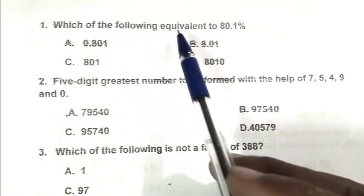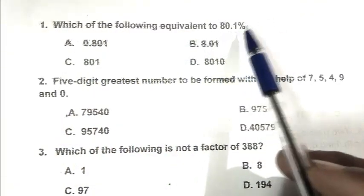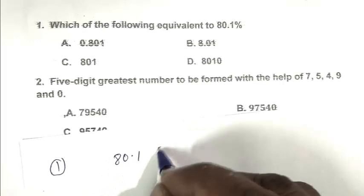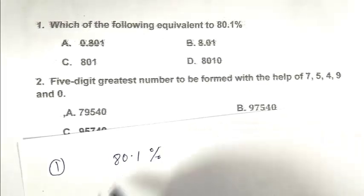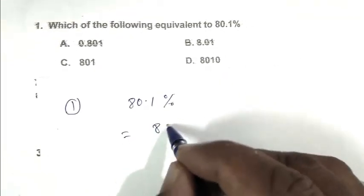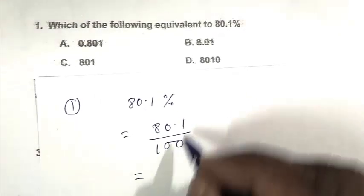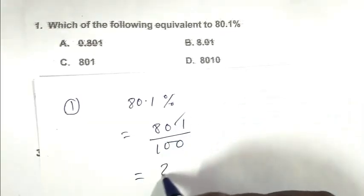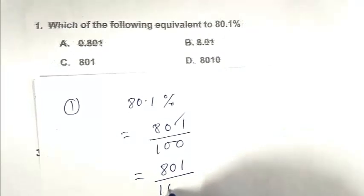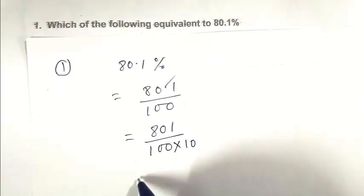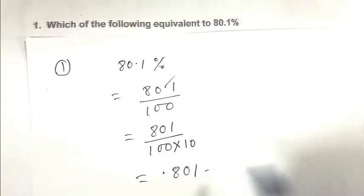Let's start, and before we start, don't forget to subscribe to my channel. Question number 1: Which of the following is equivalent to 80.1%? So friend, 80.1% is 80.1 by 100. Eliminating the decimal point, we get 801 by 1000, which is 0.801. So A is the right answer.